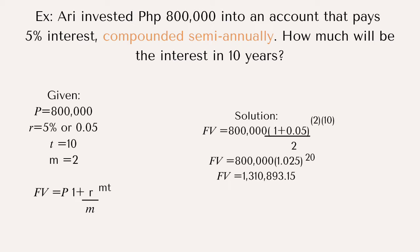Example number 2: Ari invested 800,000 into an account that pays 5% interest compounded semi-annually. How much will be the interest in 10 years? Given: principal is 800,000, rate is 0.05, time is 10, M is 2. The formula is FV equals P times (1 plus R divided by M) raised to M times T. Solving the parenthesis: 0.05 divided by 2 plus 1 equals 1.025. Then M times T: 2 times 10 equals 20. So 800,000 times 1.025 raised to 20 equals 1,310,893.15.